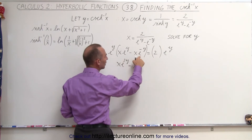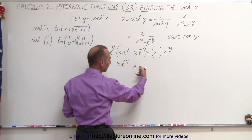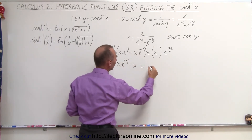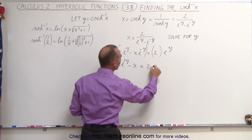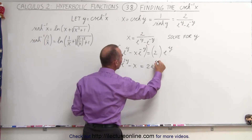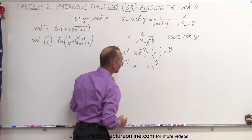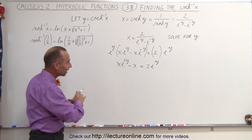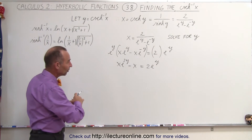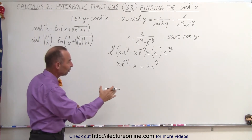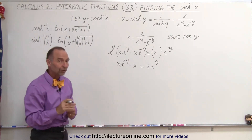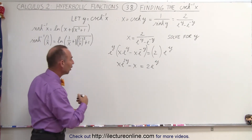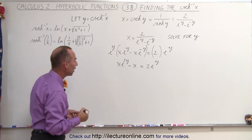Now, e to the y times e to the minus y is simply equal to 1. And on the right side we have 2 e to the y. We're going to write everything over on one side of the equation, set it equal to 0, and then we realize we end up with a quadratic equation in e to the y.